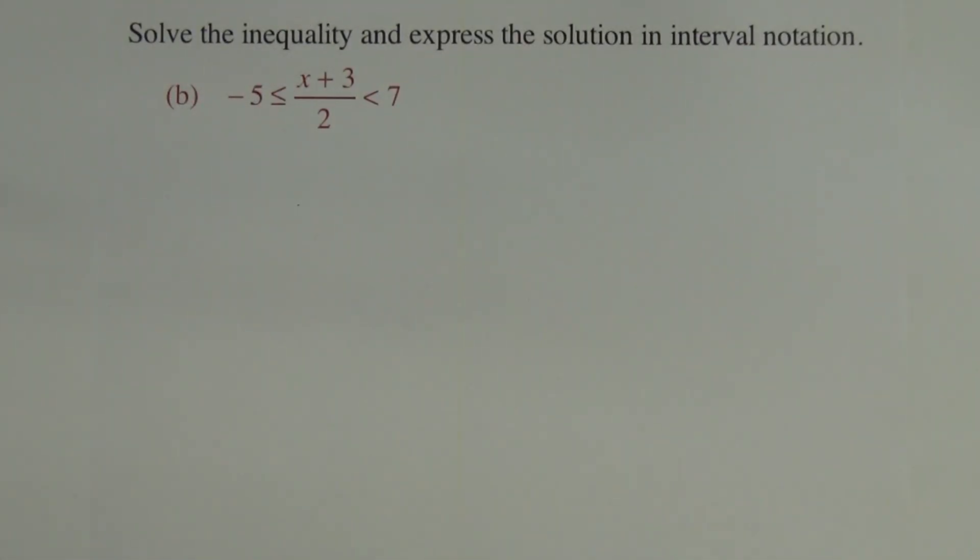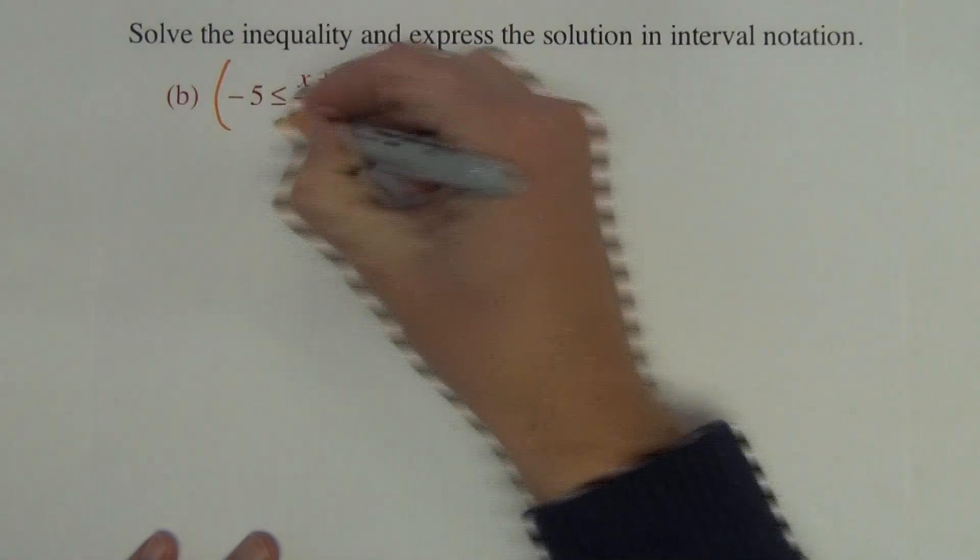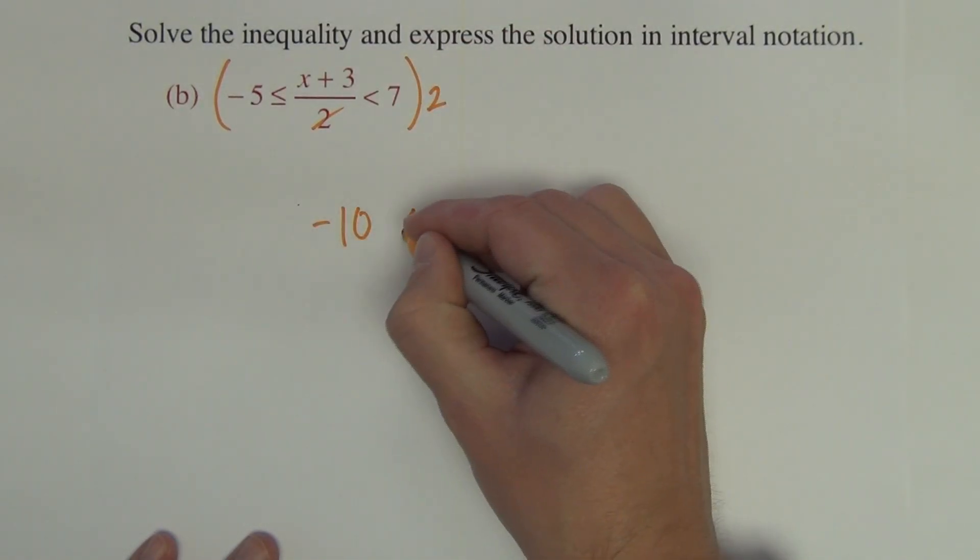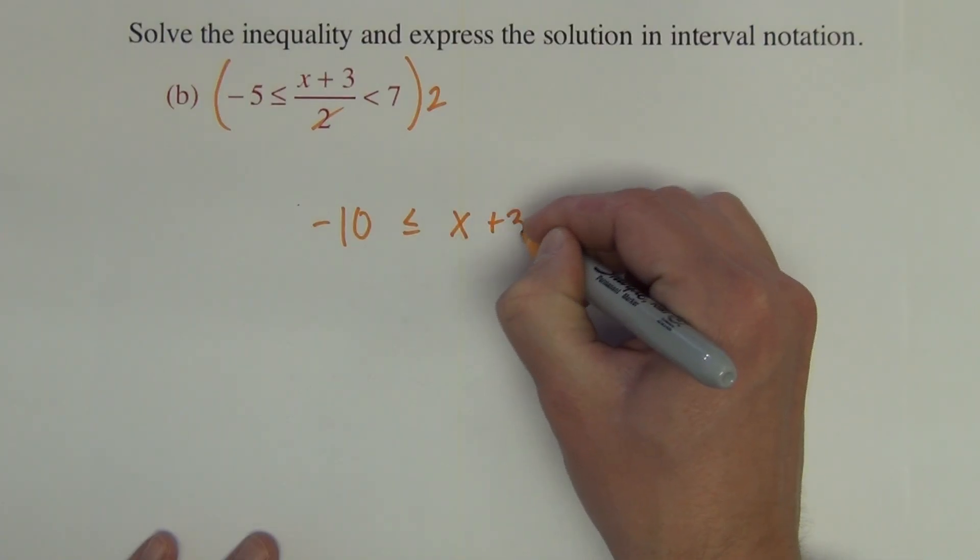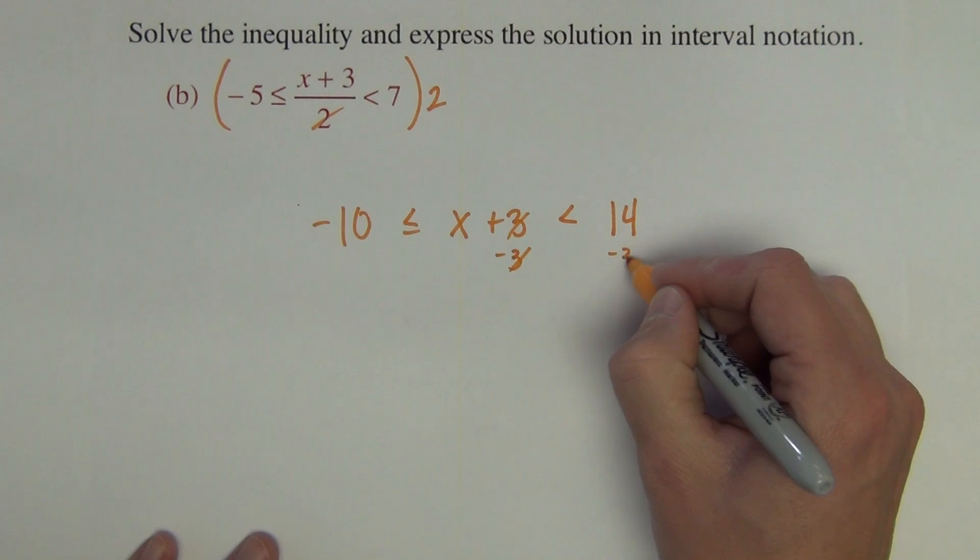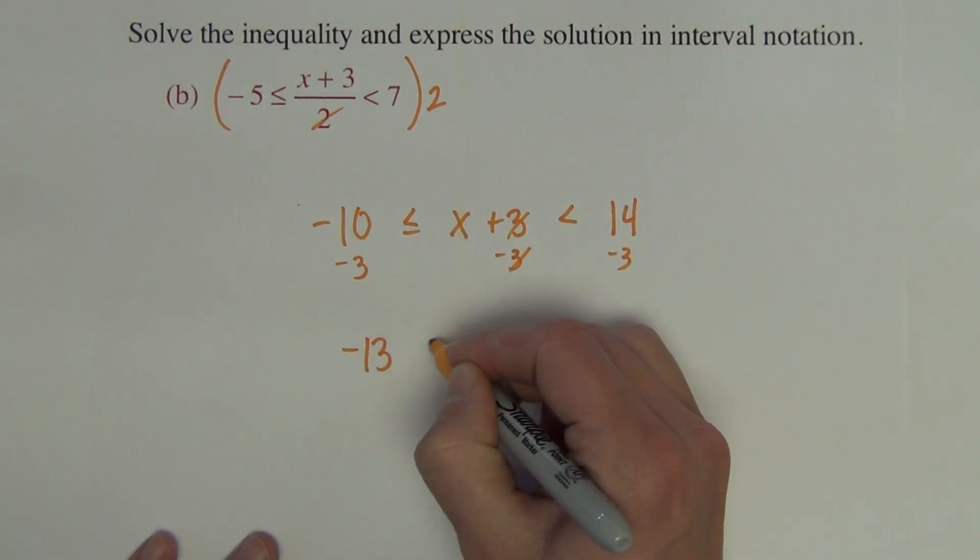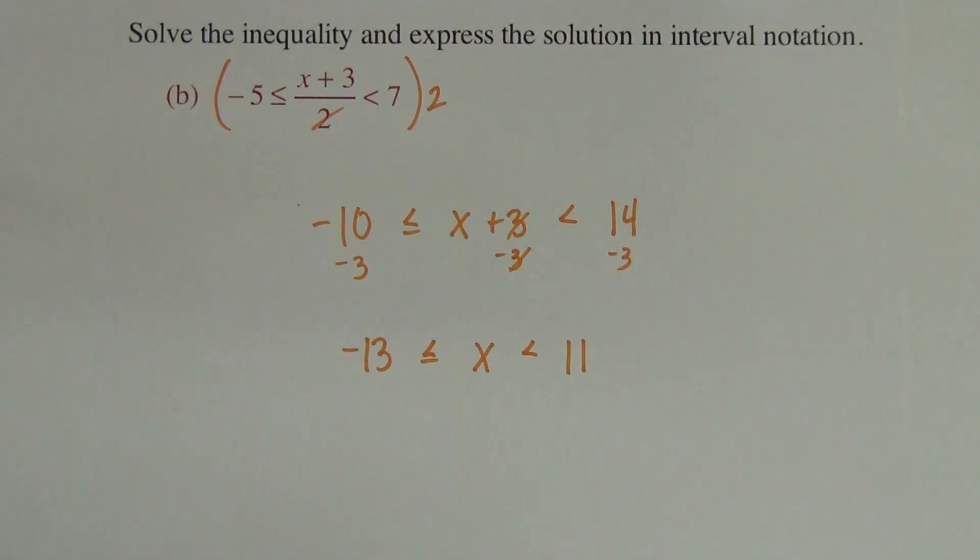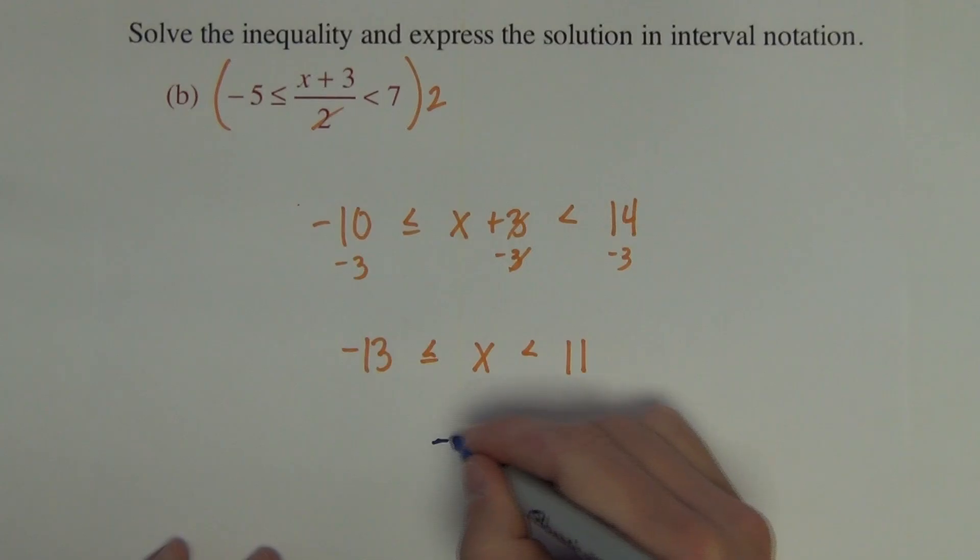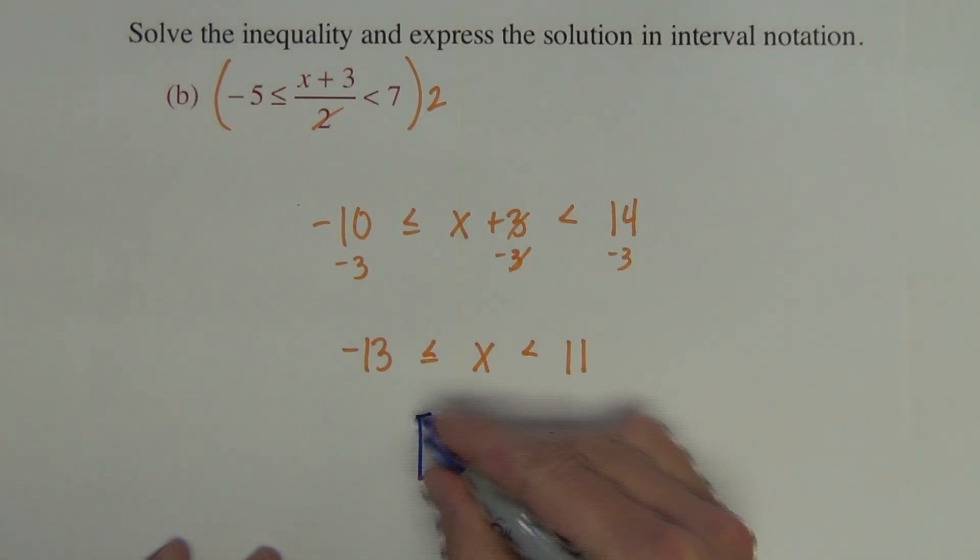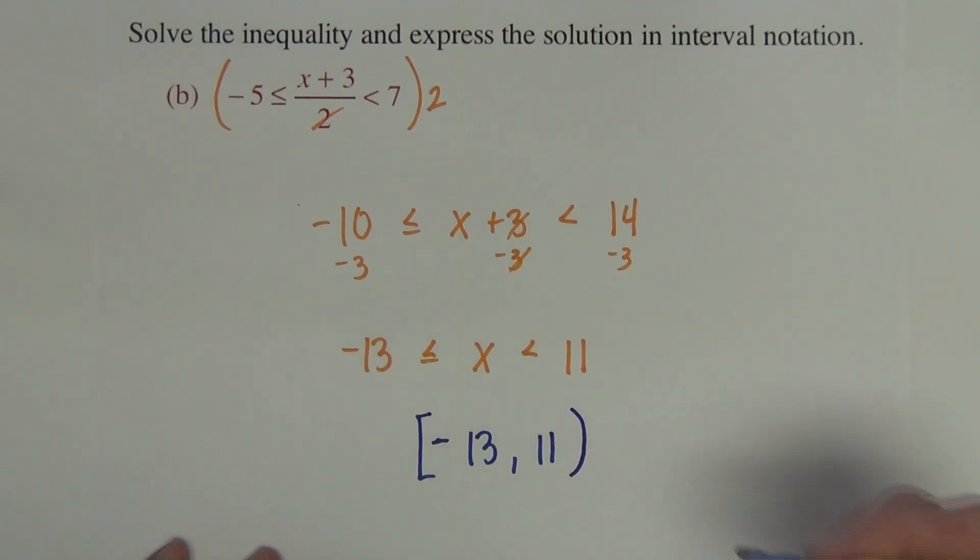This next question, I begin by multiplying the whole thing by 2. It gives me negative 10 is less than or equal to x plus 3, which is less than 14. Subtract 3. So we get negative 13 is less than or equal to x, which is less than 11. So I want all of the x's that are between negative 13 and 11. We want equal to the negative 13, so square rounded on the 11.